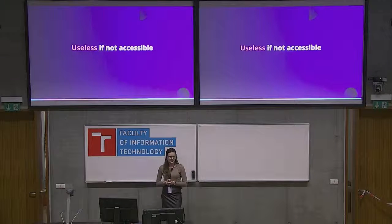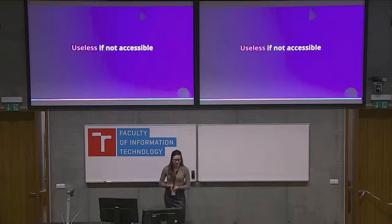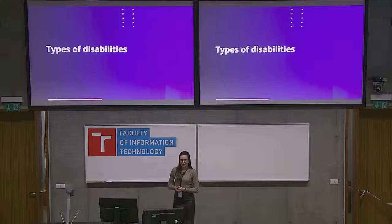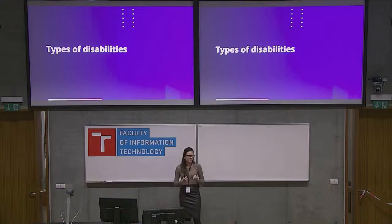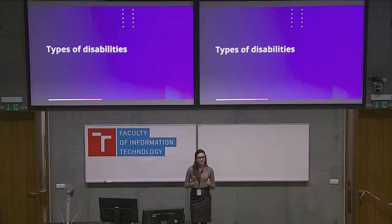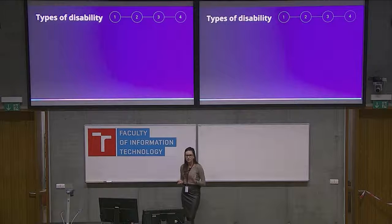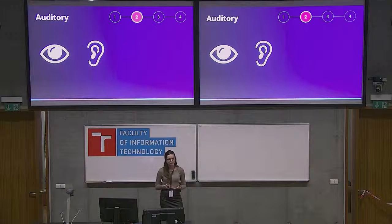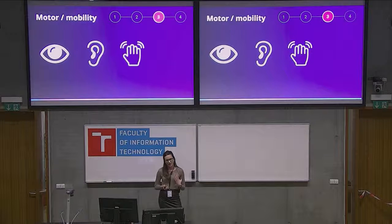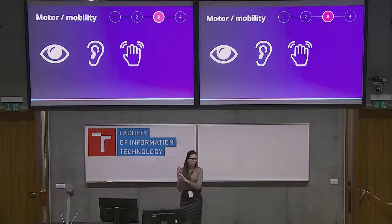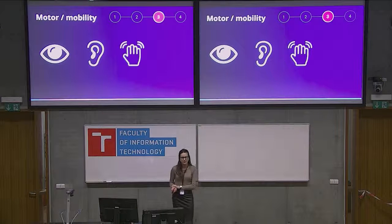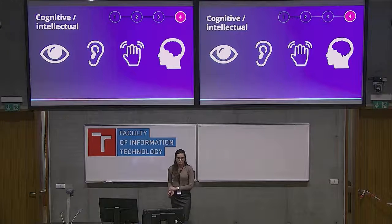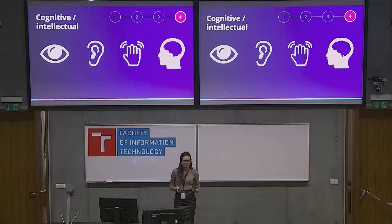What we create is useless if it's not accessible. When implementing accessibility, it's important to know what kinds of disabilities your users may have. There are four common types: visual — from low vision to total blindness; auditory — from hard of hearing to total deafness; motor/mobility — from an injured wrist or broken arm to a paralyzed body; and cognitive/intellectual — impairments with development skills, logic, memory, like dyslexia.